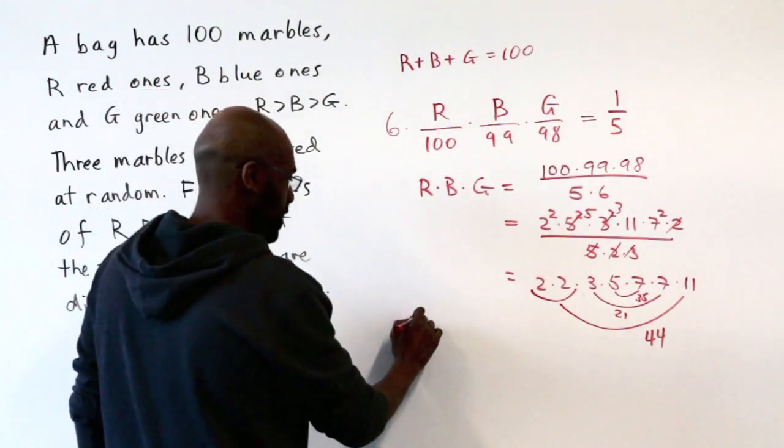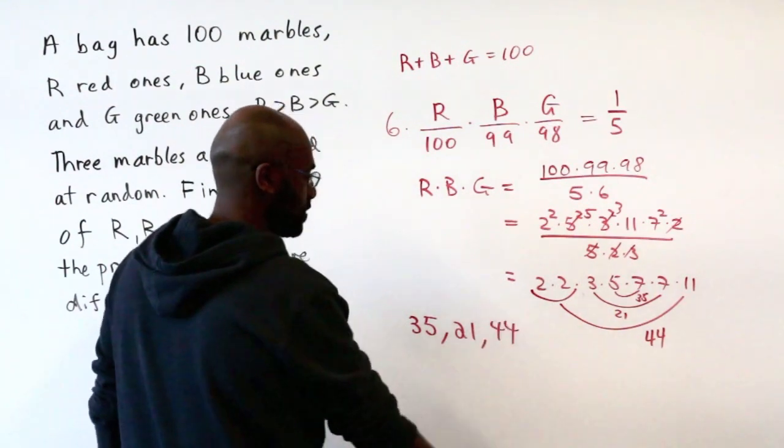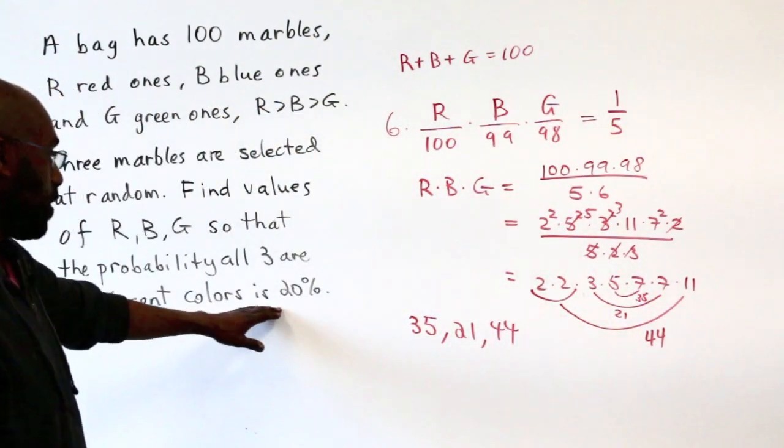So if we assign 35, 21, and 44 to the colors, we'll get exactly that this probability is 20%.